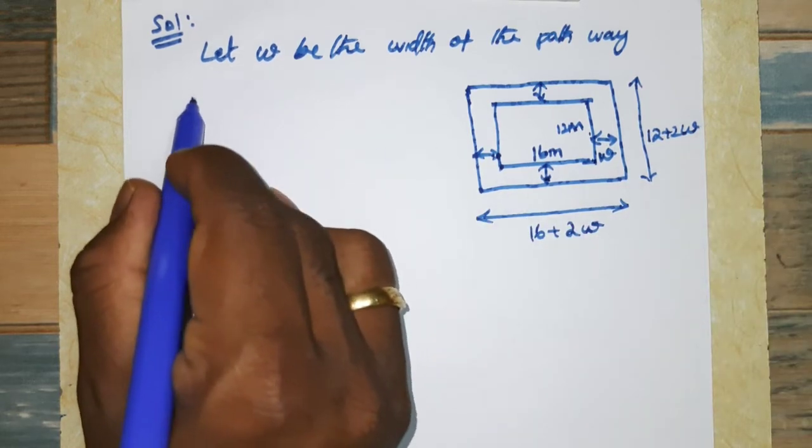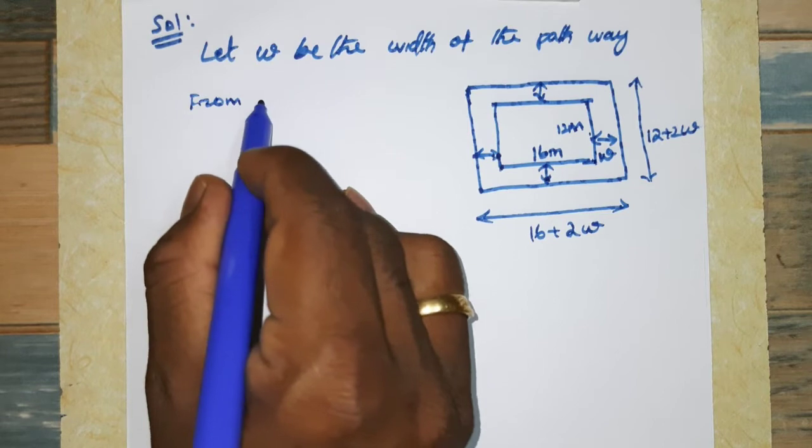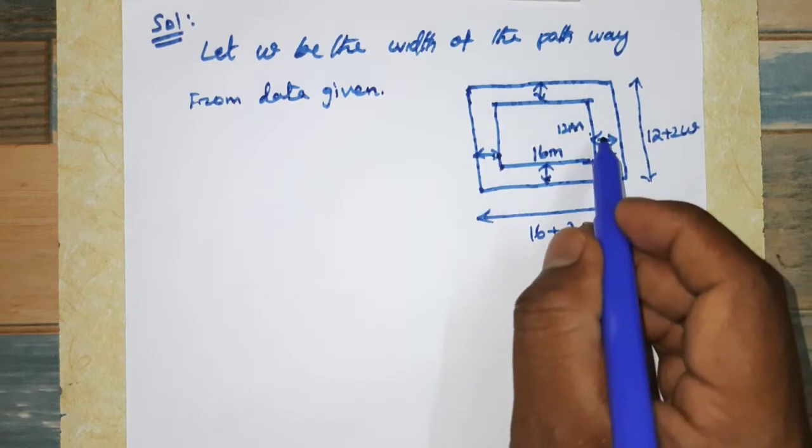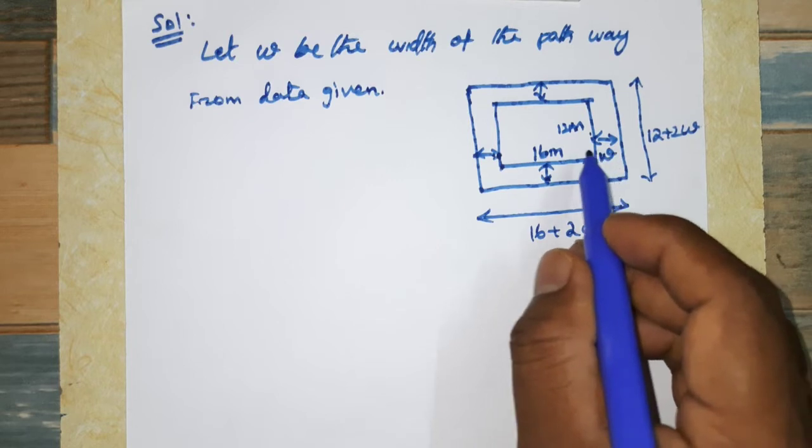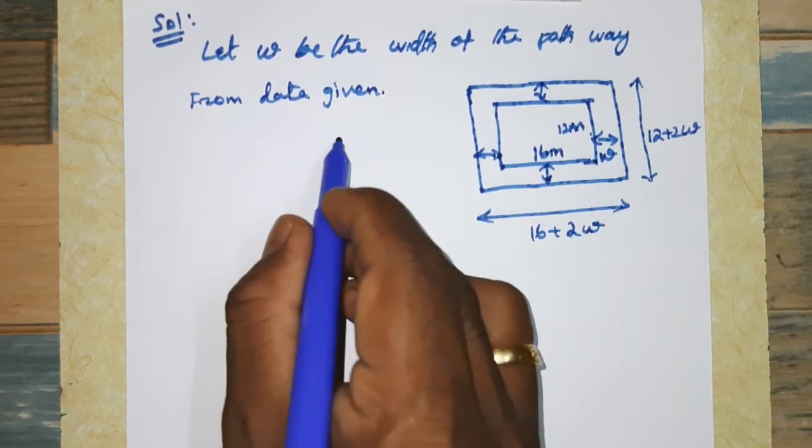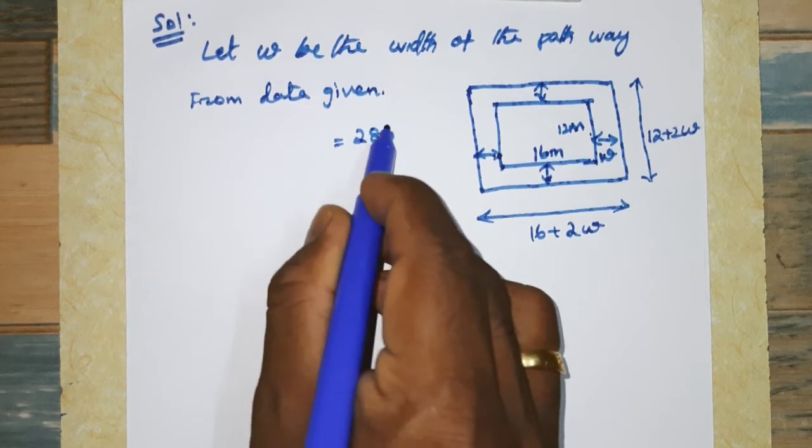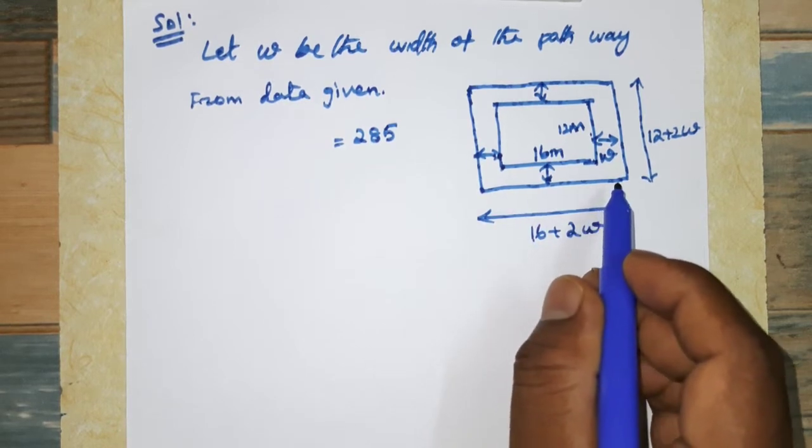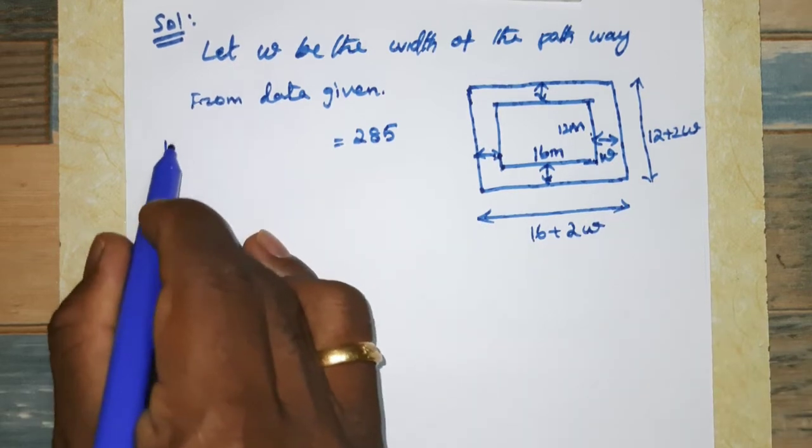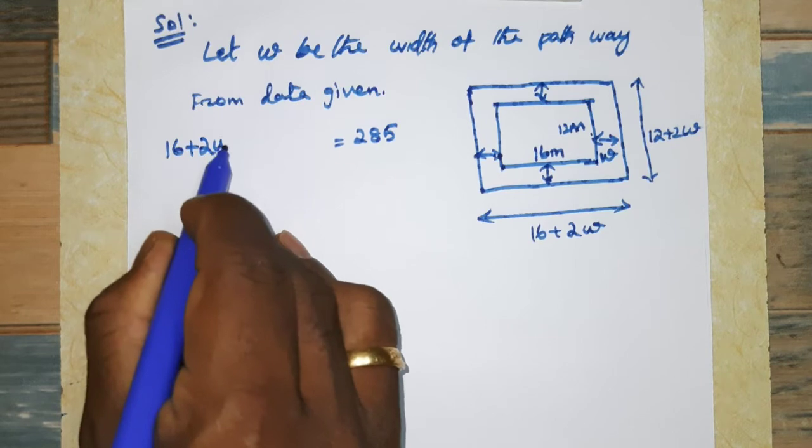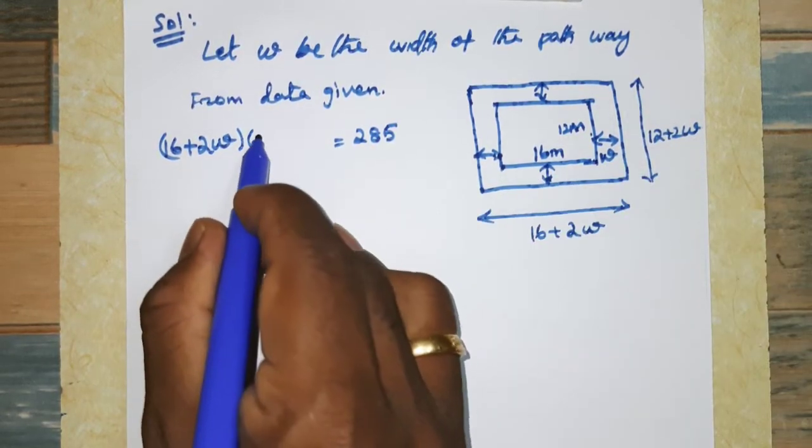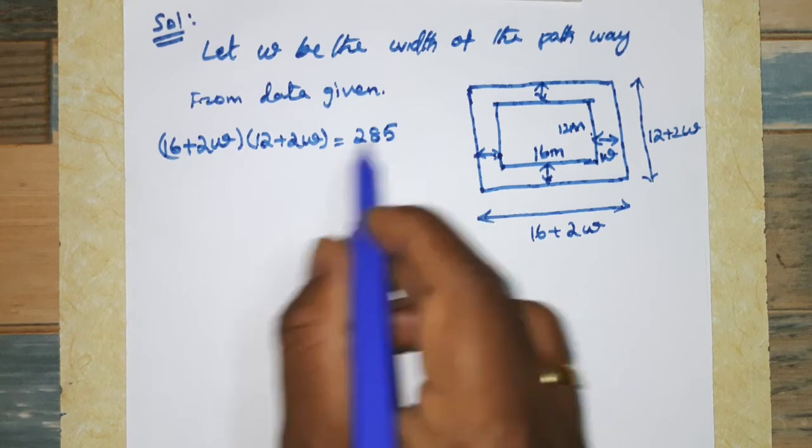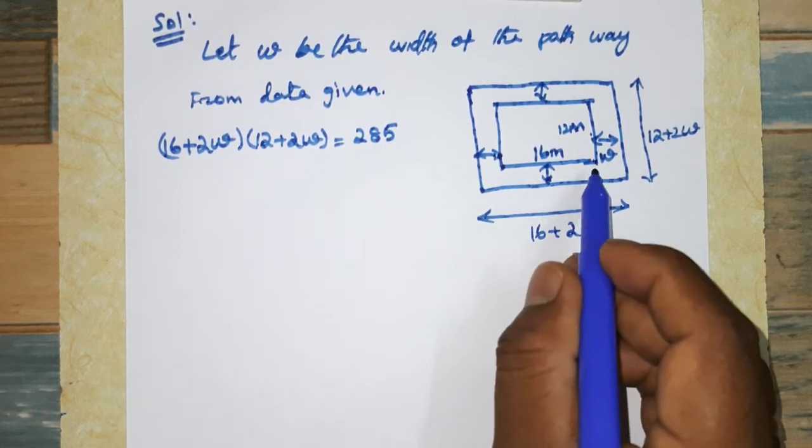From the data given, the area of the rectangular garden with the pathway is 285 square meters. The area of a rectangle is length times breadth, L into B. So (16+2W) times (12+2W) equals 285.